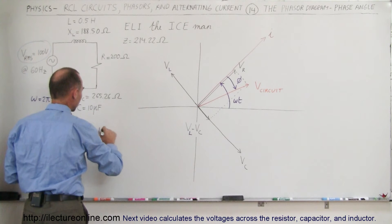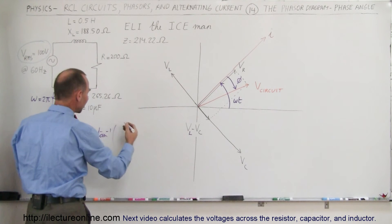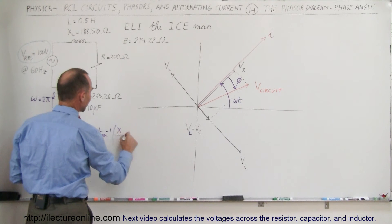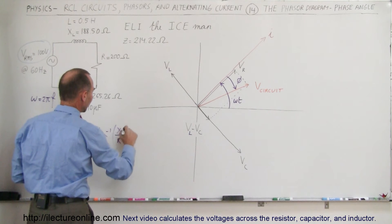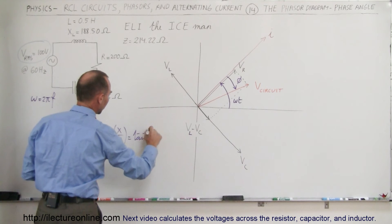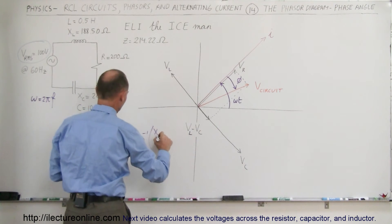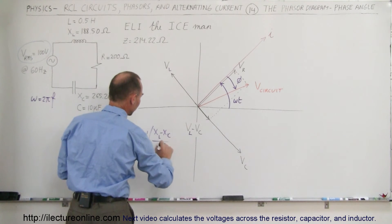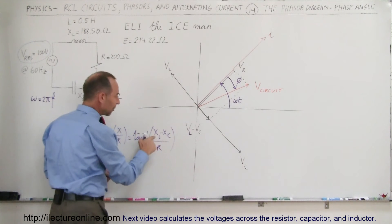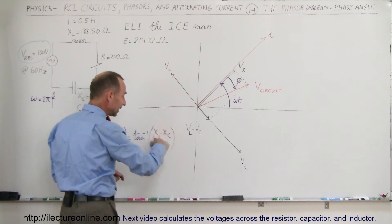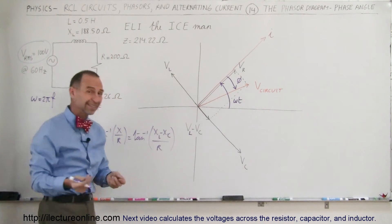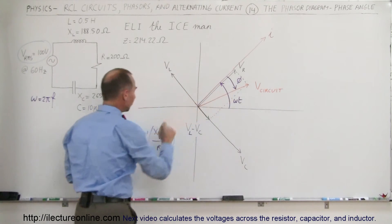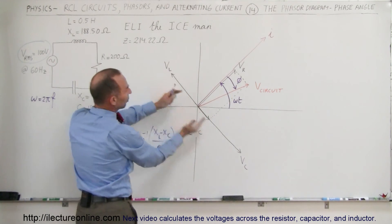The phase angle is equal to the arctangent of the opposite side over the adjacent side — the reactance divided by the resistance — so that's equal to the arctangent of X sub L minus X sub C divided by resistance. Notice that if X sub L is smaller than X sub C, this will become a negative number, and the arctangent of a negative number is a negative angle — that's where you get a negative phase angle when X sub L is smaller than X sub C.